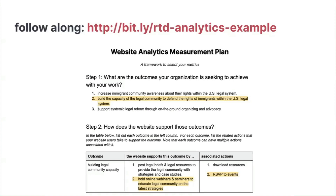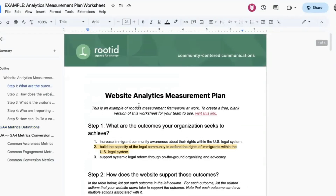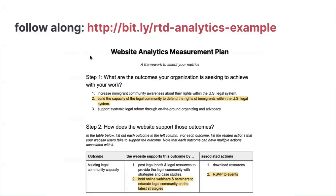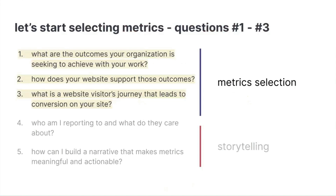For those of you that want to follow along at home, I have an example — I'll put the link in the chat. This is a filled-in version of the worksheet that we're going to do together in this workshop. After we get through the third question, we're going to stop and you're going to fill this out. Then for questions four and five, you're going to do the same. If you want to follow along, I think this is really helpful to give some examples of what we are thinking about.